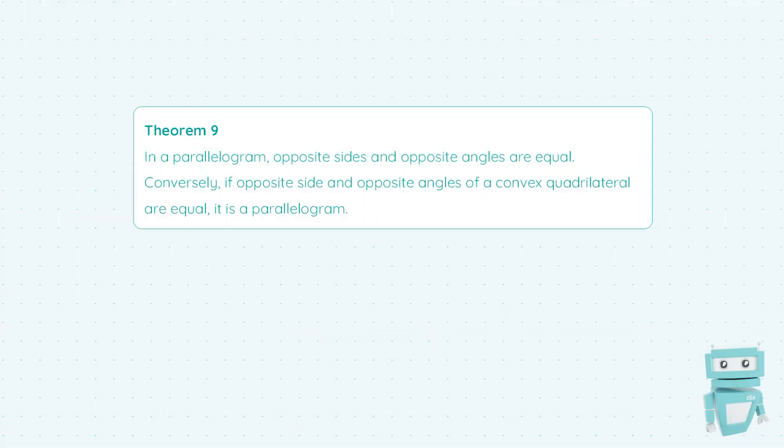Hi guys, Sean here from StudyClicks. In this video we're going to be taking a look at theorem 9, which states that in a parallelogram, opposite sides and opposite angles are equal.